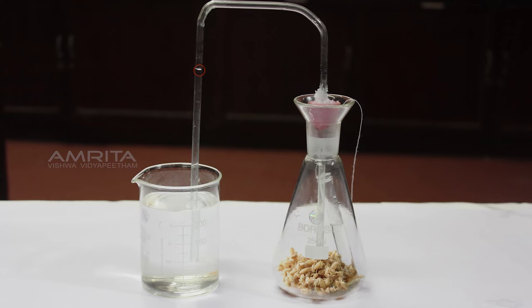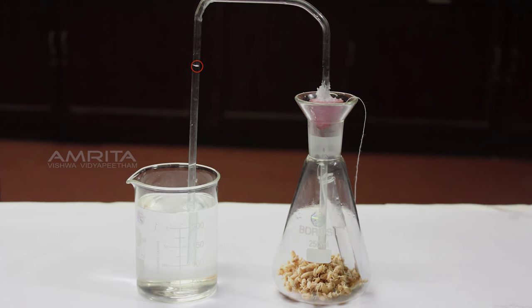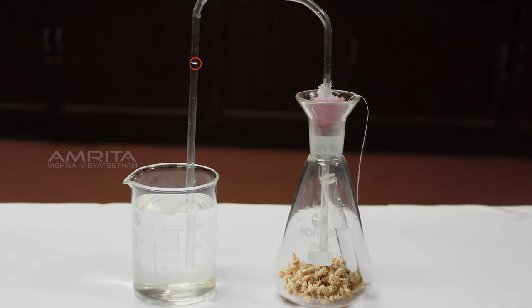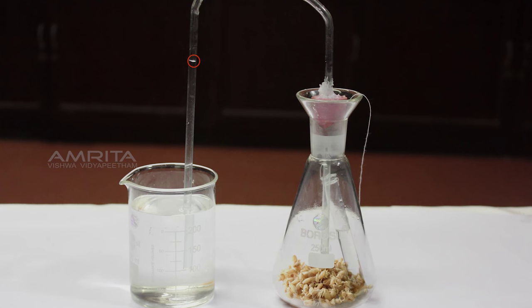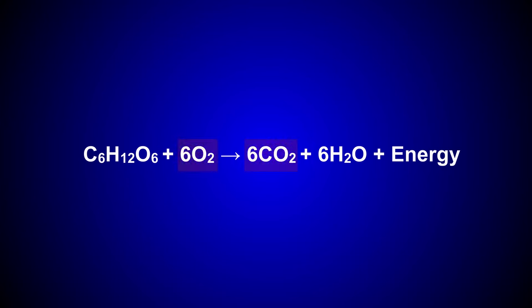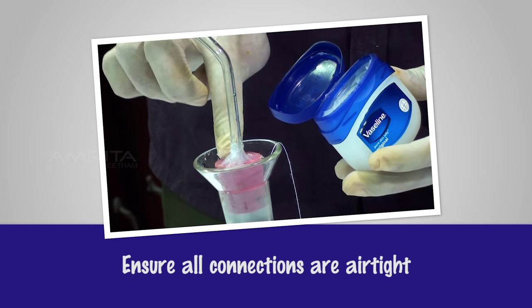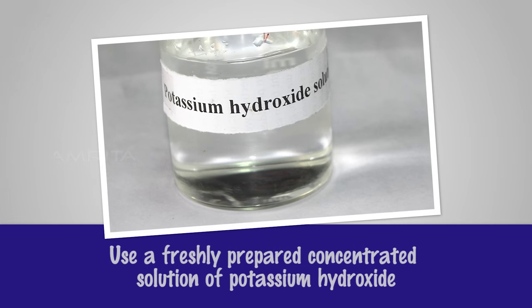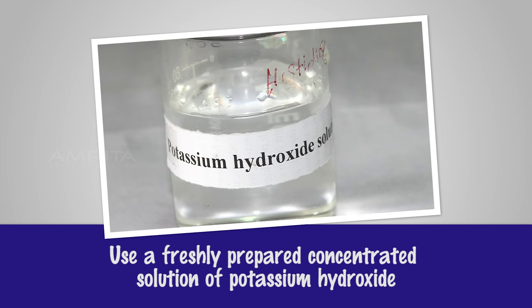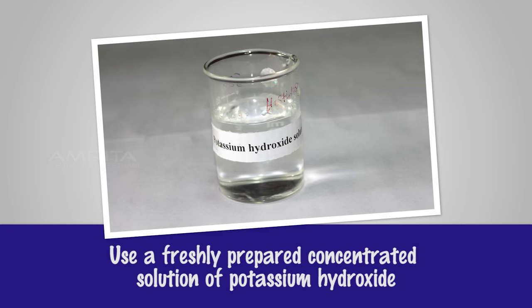But in the case of wheat grains, the rise in water level is greater because they use carbohydrate as respiratory substrate. When carbohydrates are used as substrate, equal amounts of carbon dioxide and oxygen are evolved and consumed. Precautions: Ensure all connections are airtight. Use freshly prepared concentrated solution of potassium hydroxide.